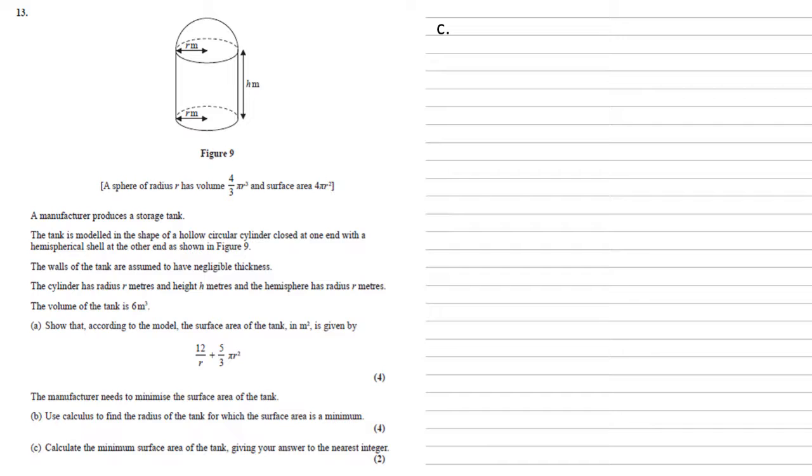For part c, we need to calculate the minimum surface area of the tank, giving the answer to the nearest integer. So, we know that the radius which gives the minimum surface area is 1.05 meters. We're just going to put that into our expression of 12 over r plus 5/3 πr². This will give us the minimum surface area.